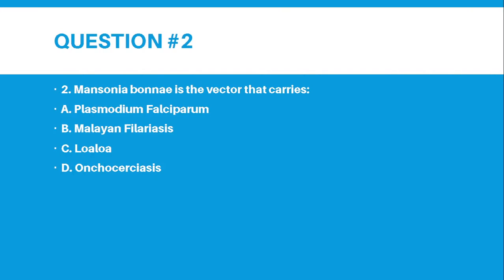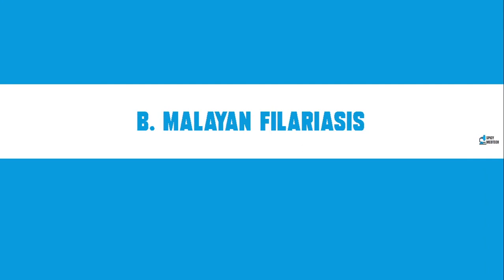Number 2. Mansonia bonnet is the vector that carries: Letter A, Plasmodium falciparum; B, Malayan filariasis; C, Loa loa; or D, Onchocerciasis. And the correct answer for number 2 is letter B, Malayan filariasis.